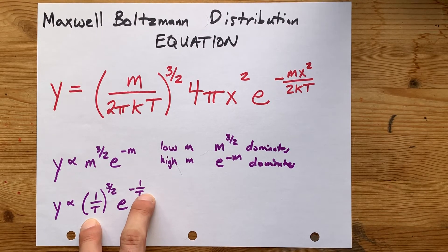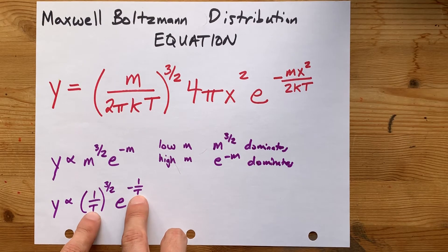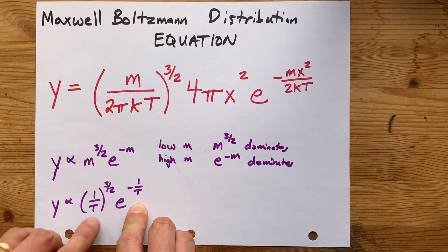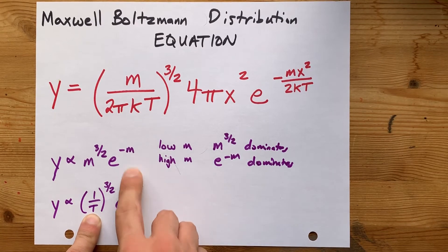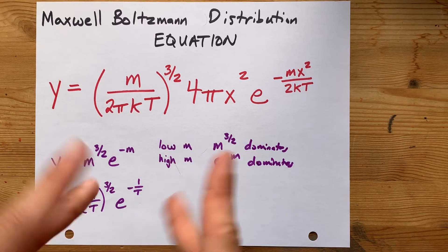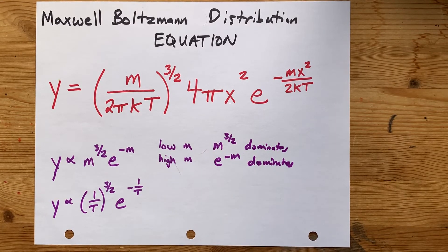So 1 over T is actually acting in the exact same way as the M's were here. Replace that M with 1 over T. Replace that M with 1 over T. Now, that doesn't quite mean that they're perfect inverses of each other.